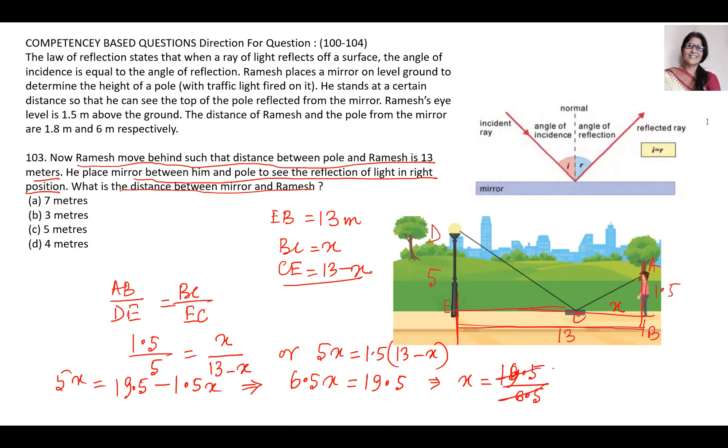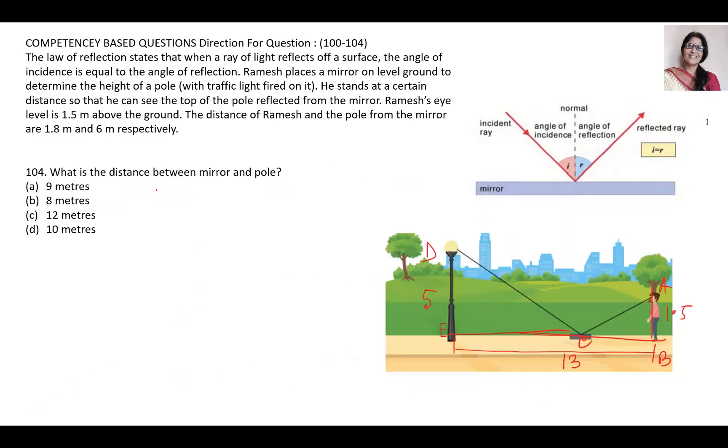This will be 3 meter. So BC distance is 3 meter. The distance between mirror and the pole was 3 meter, so this will be 13 minus 3, which is 10 meter. So D is the answer.